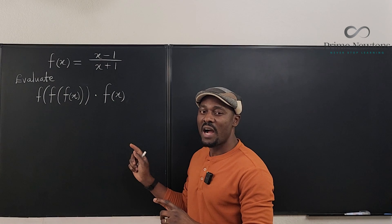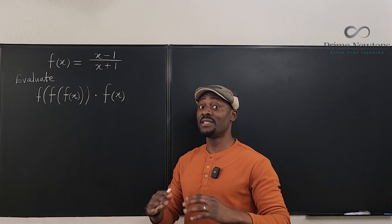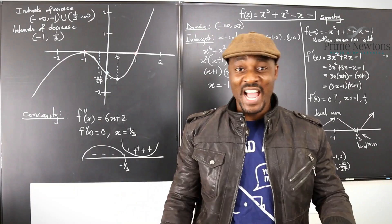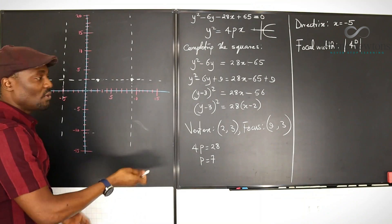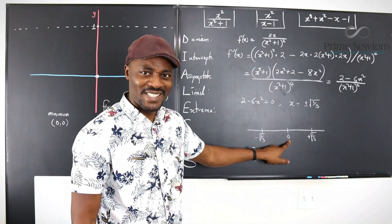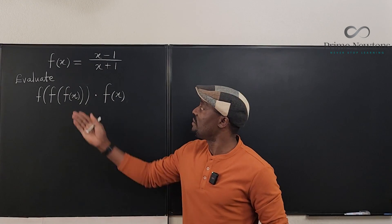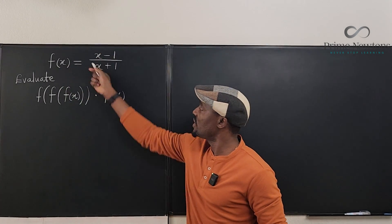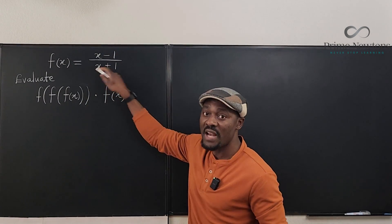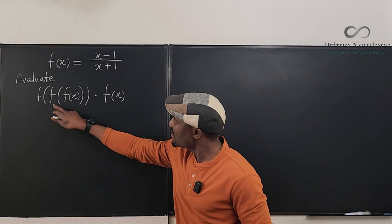I would like you to give it a shot and see if we get the same answer. It is not a difficult exercise — it is only difficult if you make mistakes. The first thing we need to do is know what our function is. Our function is such that if you give it x, it will subtract one from x and divide the result by one added to x.